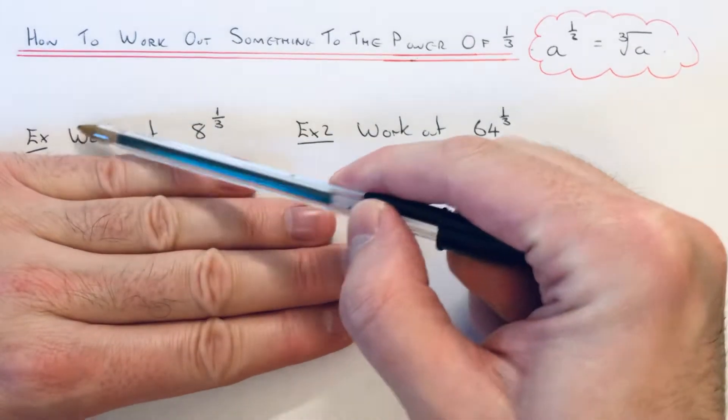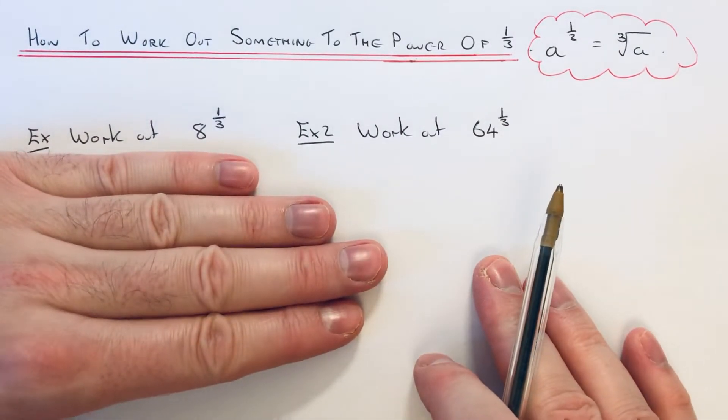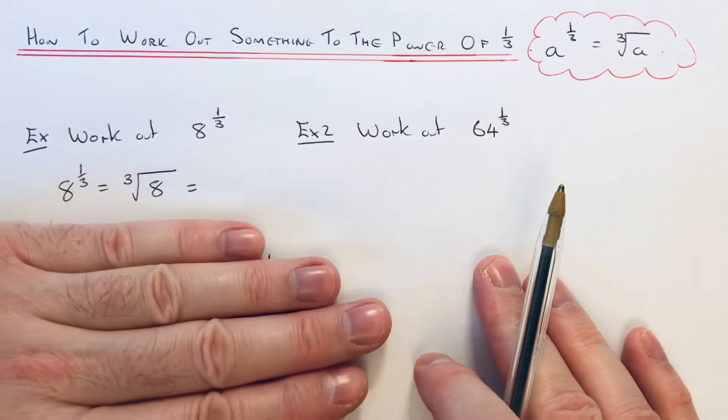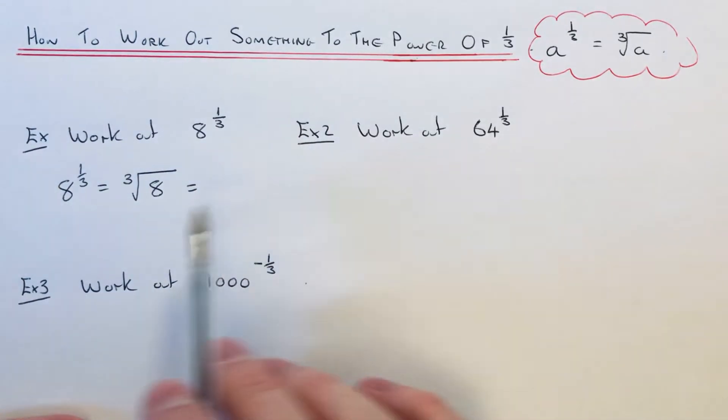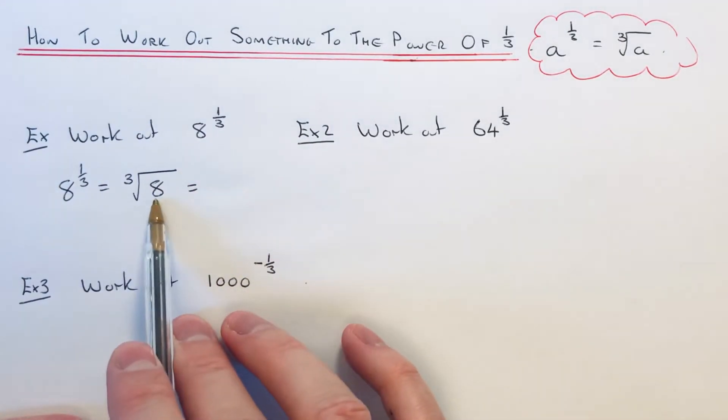So let's have a look at the first example. We've got to work out eight to the power of one third. So I've started this one off. All you need to do is do the cube root of eight.